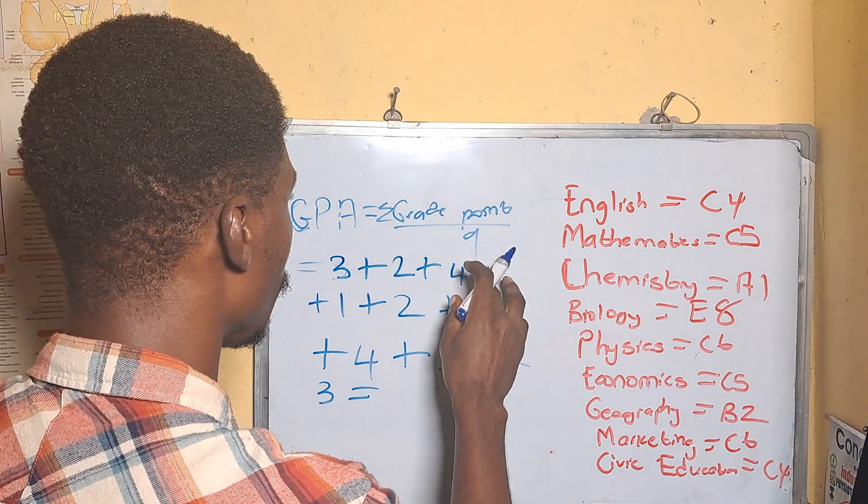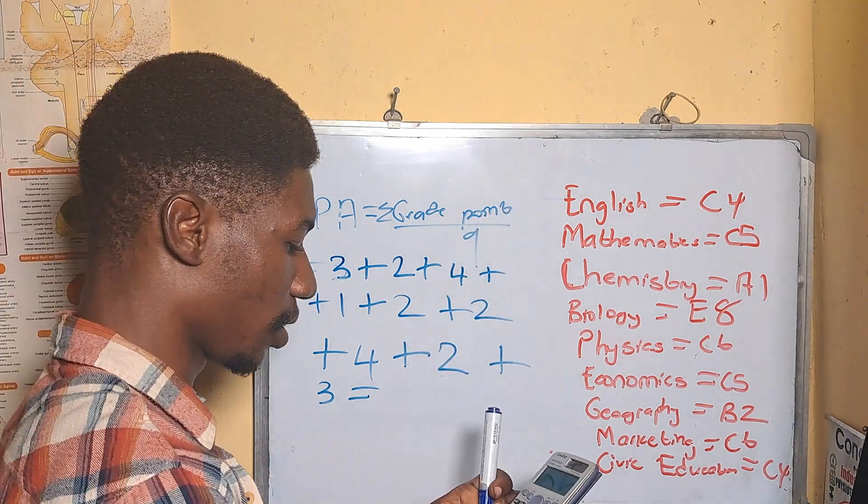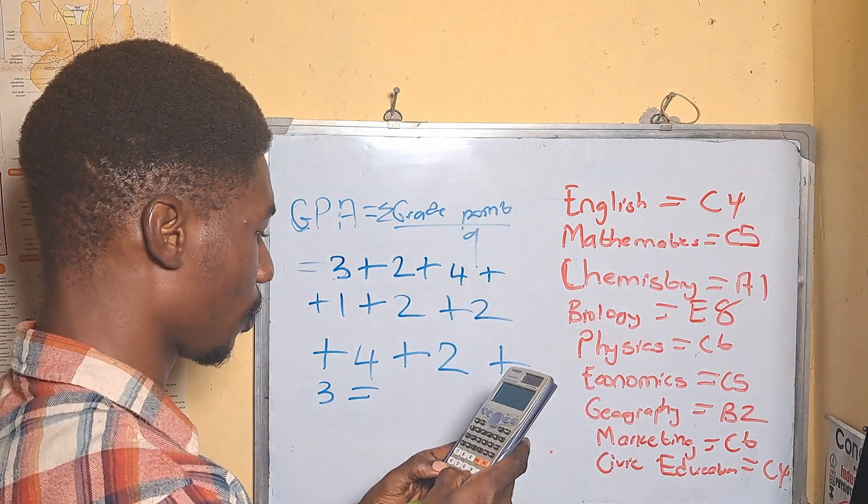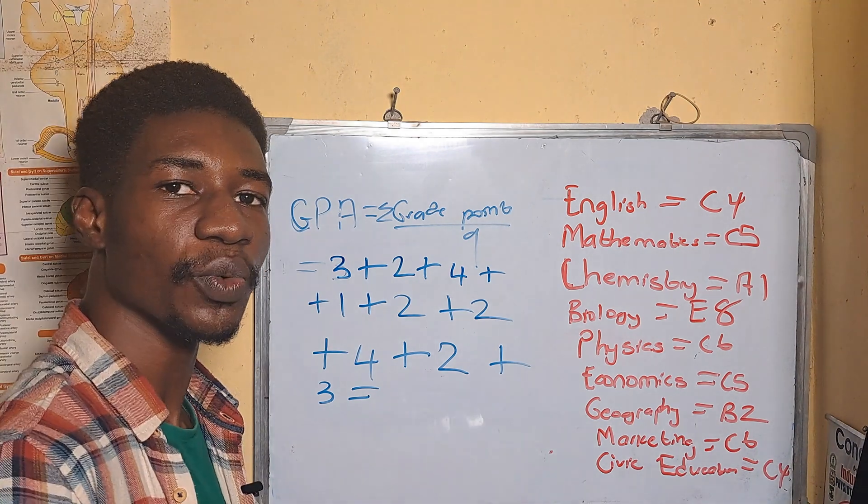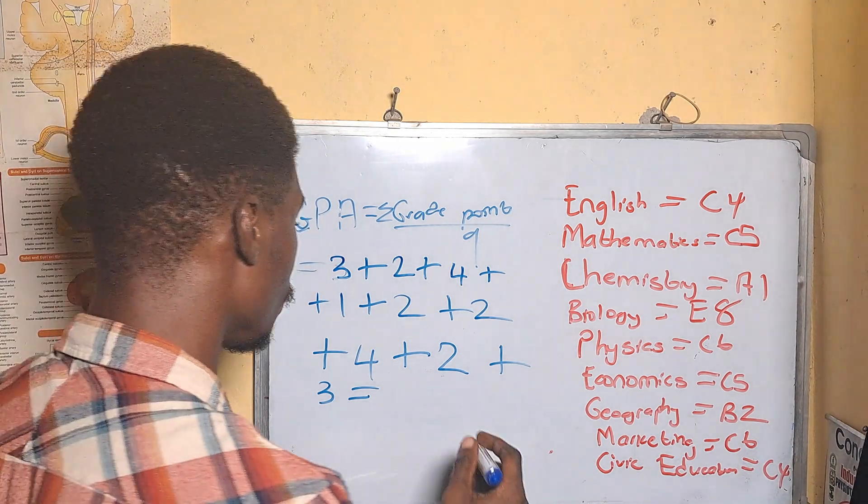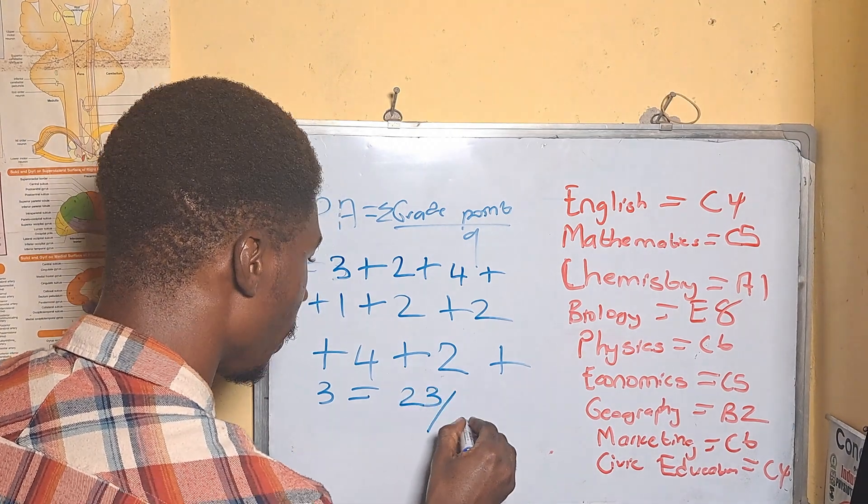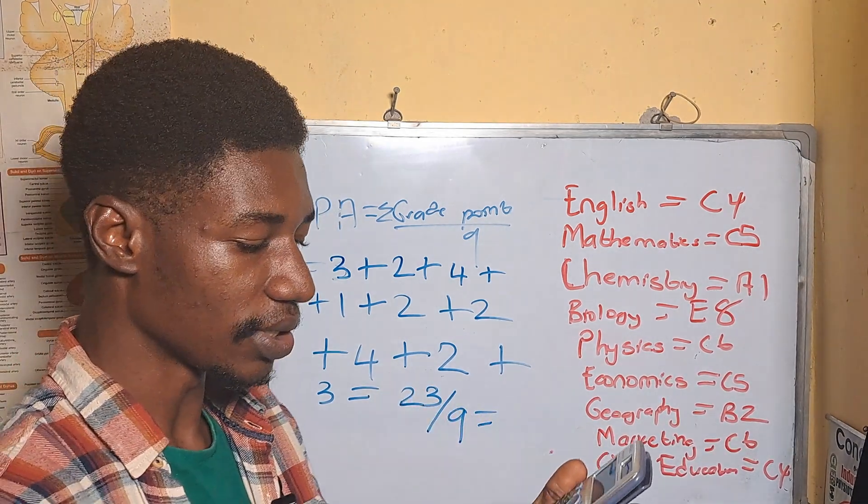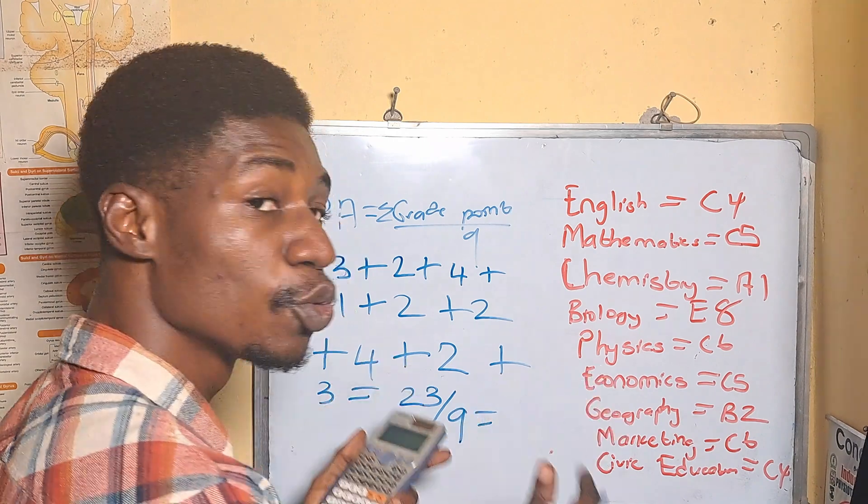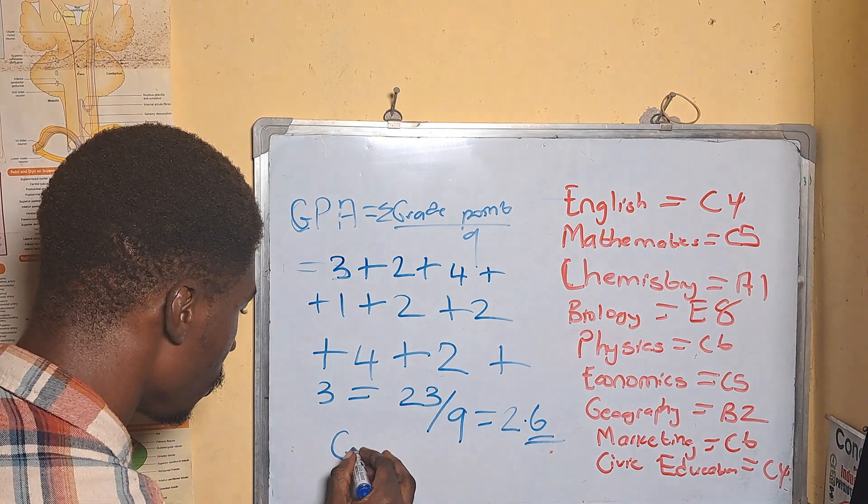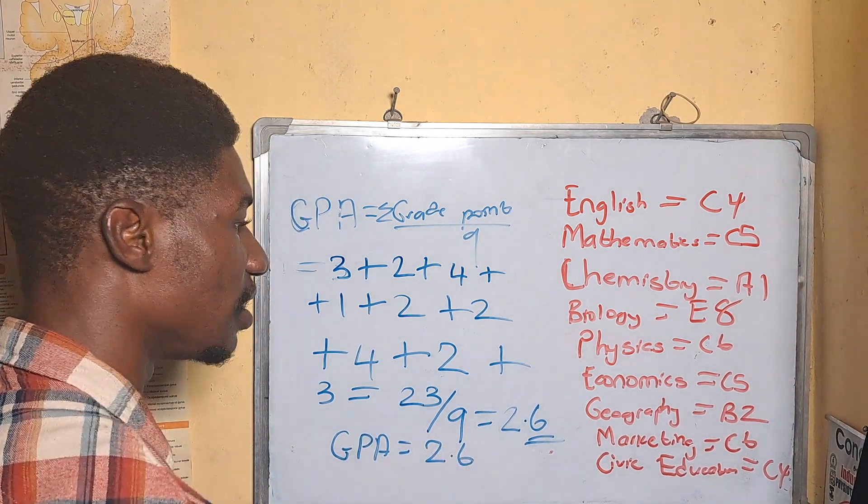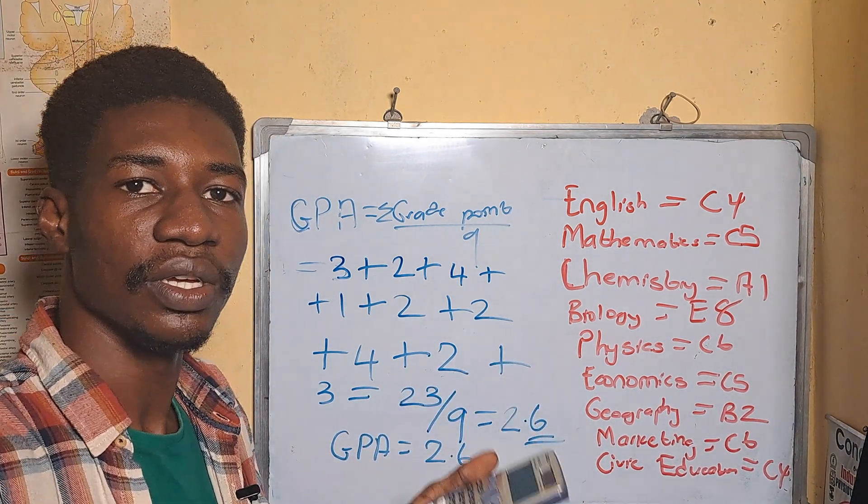We are going to add this to get the summation and divide by nine. The total we have here is 23. So this will be 23 divided by nine. When you divide 23 by nine you have 2.6, so the GPA equals 2.6. This is how you calculate the GPA.